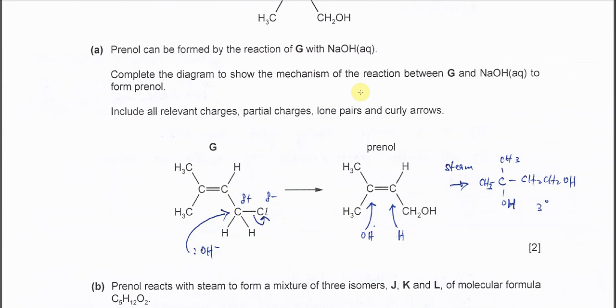Complete the diagram shows the mechanism. Include all the charge, partial charge, lone pair, correct arrow, all this. So first you start with hydroxide. Hydroxide must show the negative charge, lone pair on oxygen.